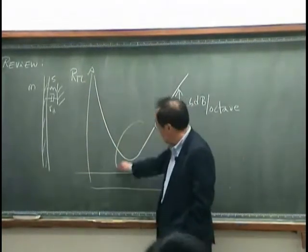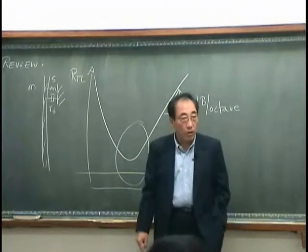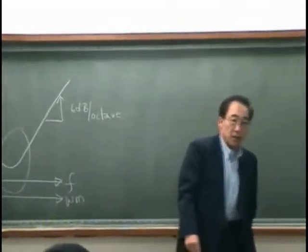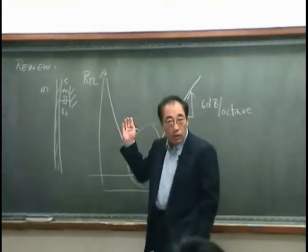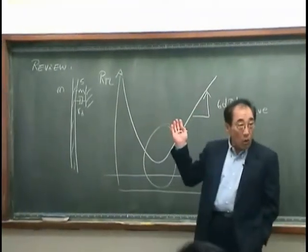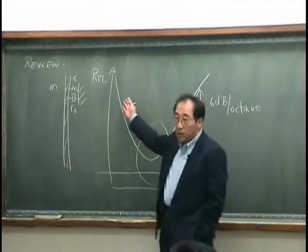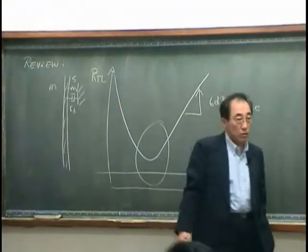In this region, we call damping-dominated. This region we call mass controlled, or the region where mass law dominates. And this region we call stiffness controlled region.